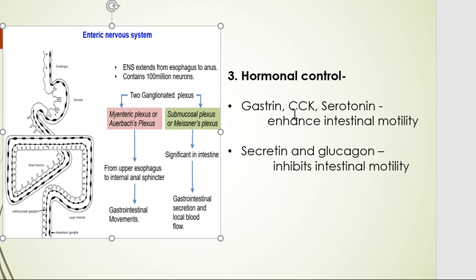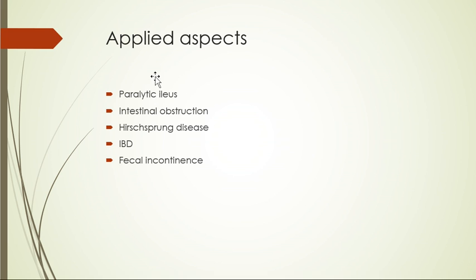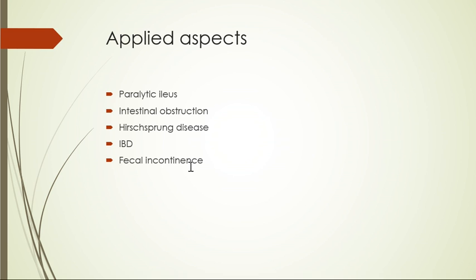Third is hormonal control. Hormones that increase motility include gastrin, CCK (cholecystokinin), and serotonin. Hormones that inhibit or decrease motility include secretin and glucagon. If motility is affected, consequences include: paralytic ileus (no plexus, no movement), intestinal obstruction, Hirschsprung's disease (congenital absence of plexus causing no movement), and IBD or hypermotility from infection. If sphincters lack proper motility and cannot contract, fecal incontinence can also occur.